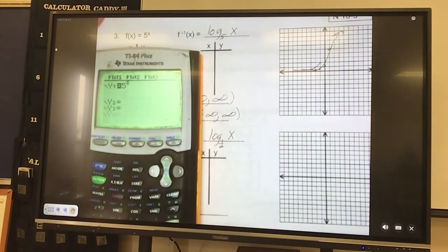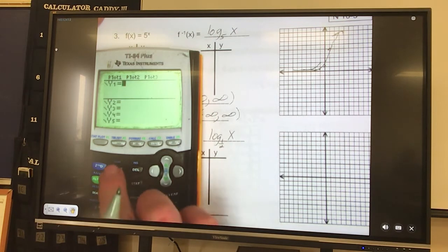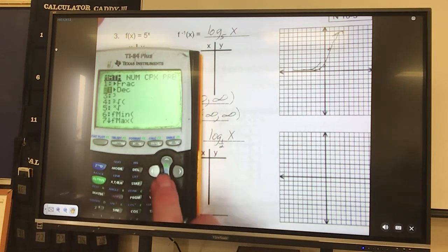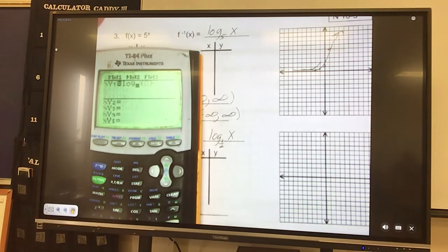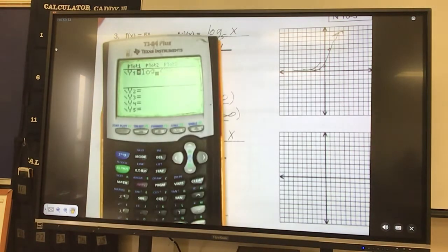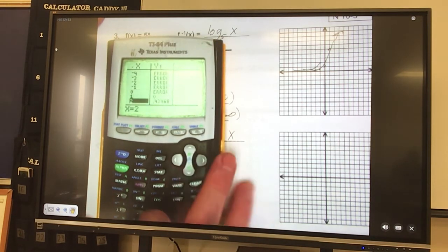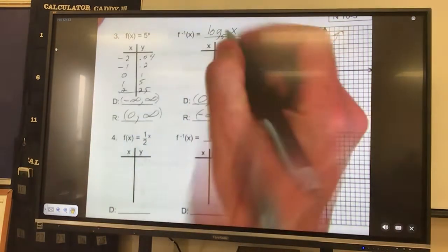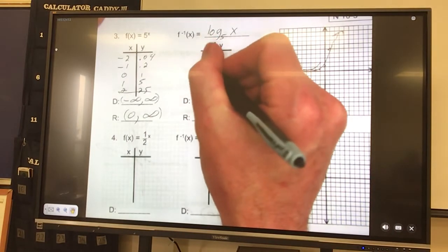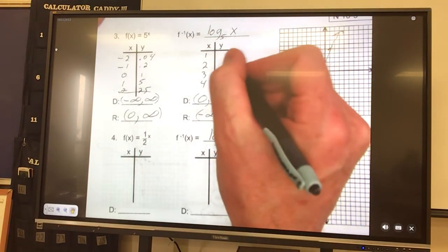We got clear log. So we want to log base, log base 5, x. Table. We got all errors, so we know we have to start at 1. Let's do a couple points, or a few points here. 1, 2, 3, 4. 1 is 0.